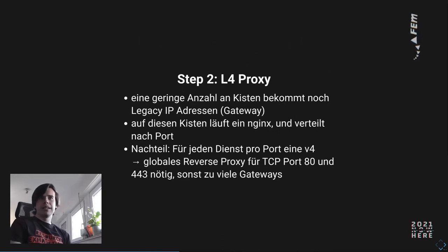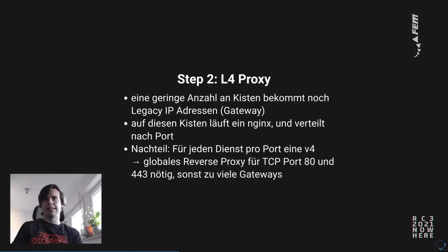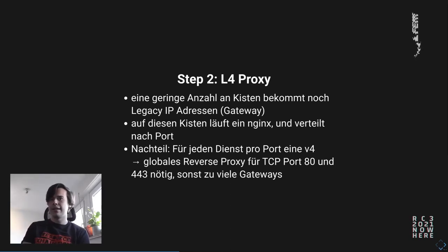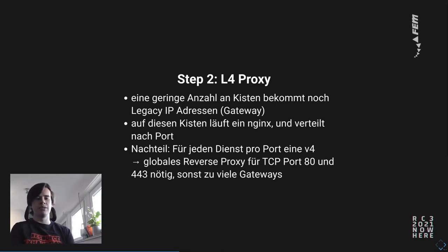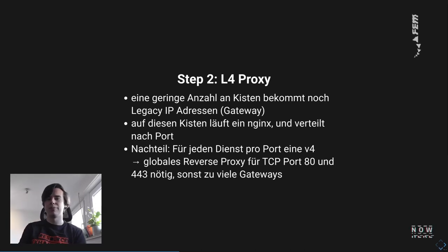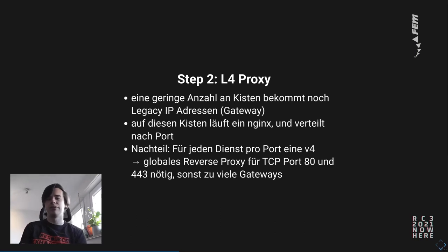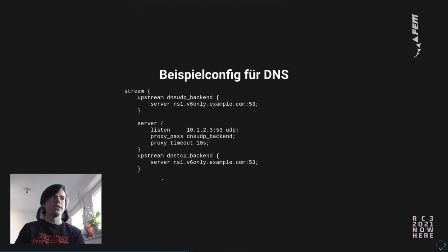That's a fun thing, but it isn't useful if not many people do it. So do we need legacy IP everywhere? No. That's what step two is for: an L4 proxy. The idea is that a small number of boxes will have a legacy IP address — I call them gateways. On these boxes you have nginx and they distribute the requests to the correct IPv6 backends on a port basis. So if a TCP port 80 request comes from legacy IP, nginx knows to which server with real IP to forward it. You need one of them for every service that has a used port, which of course means for HTTP and HTTPS you need to set up a proxy.